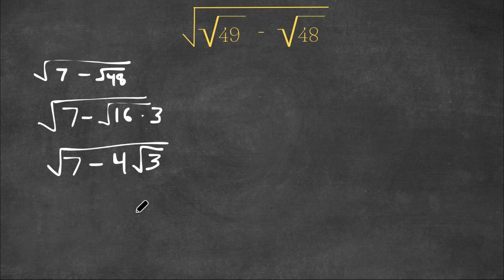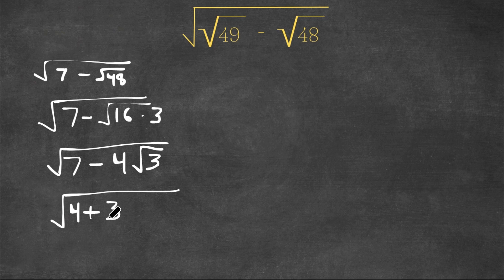So now 7 is equal to 4 plus 3, right? So I'm going to rewrite 7 as 4 plus 3, and we're subtracting this with 4, which is equal to 2 times 2.